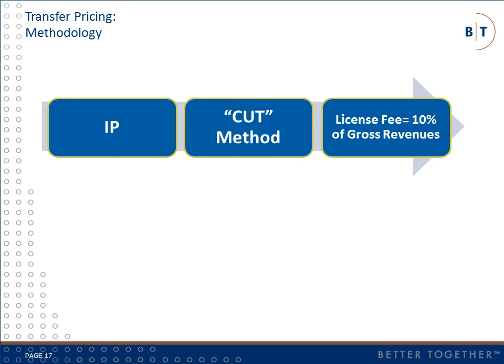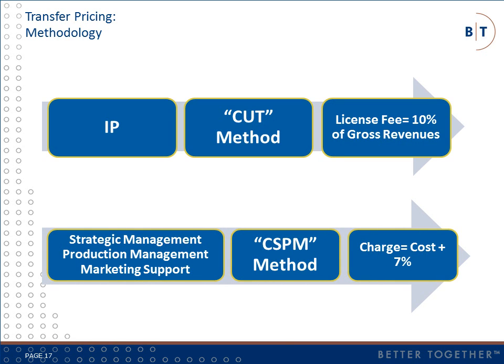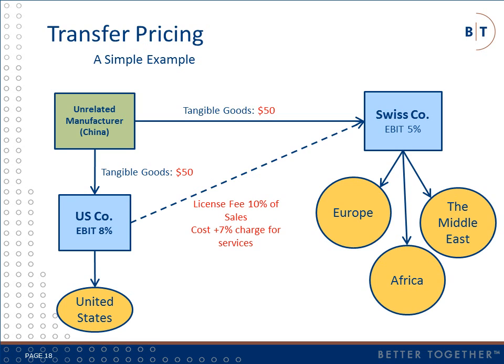There are several methods that can be used to determine an appropriate license fee to charge for the rights to sell U.S. Co.'s products. In this example, the comparable uncontrolled transaction method, or CUT method, is used and the arm's length royalty rate is determined to be between 8% and 12%. Next, the charge for strategic management, production management, and marketing support is evaluated. The cost of services plus method, or CSPM, is selected and another search for comparable companies determines that a markup on costs of 7% will satisfy the arm's length standard. As a result, the additional charges are made and SwissCo's EBIT is now reduced to 5%, which falls within the arm's length range. It is important to note that if the adjustments were not made prior to filing a tax return, U.S. Co. would be subject to the 40% gross valuation misstatement penalty on additional taxes assessed.